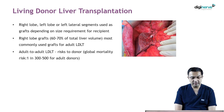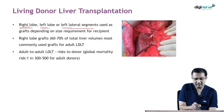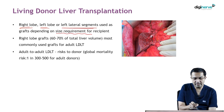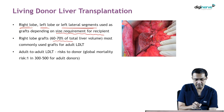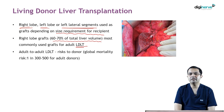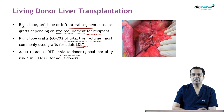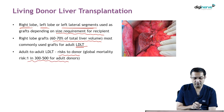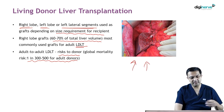In living donor liver transplantation, you can use a right lobe, left lobe, or left lateral segment depending on the size requirement of the recipient. The right lobe graft, which equates to 60–70% of total liver volume, is the most commonly used graft for adult living donor liver transplantation. The global mortality risk for the adult donor is 1 in 300 to 500.